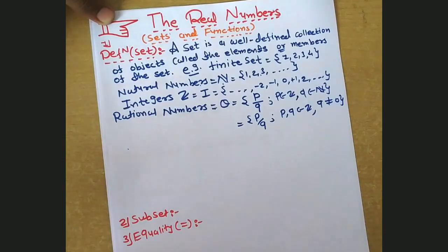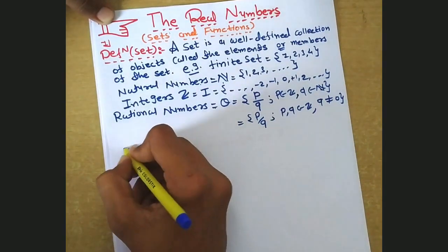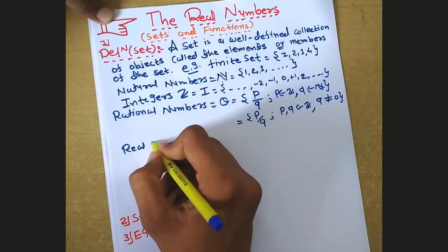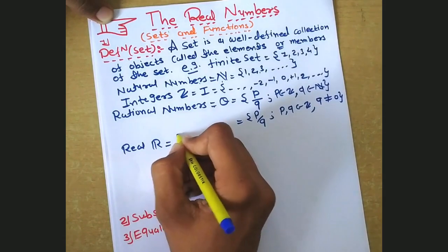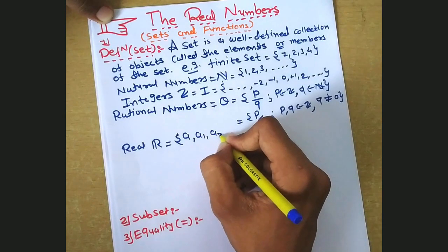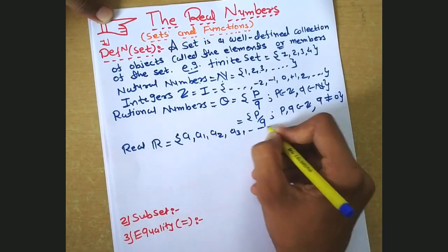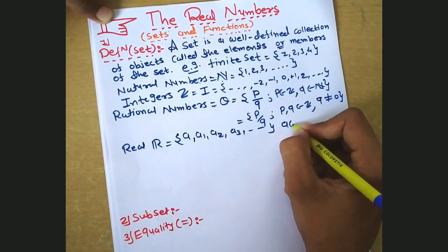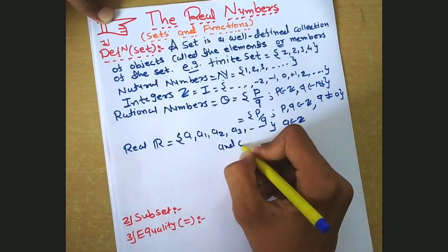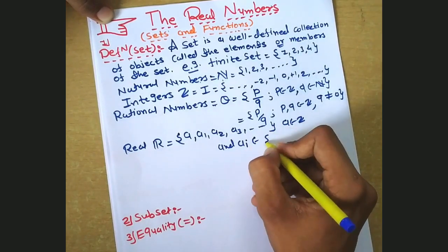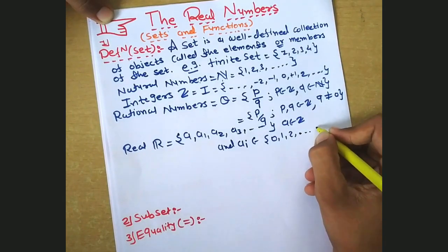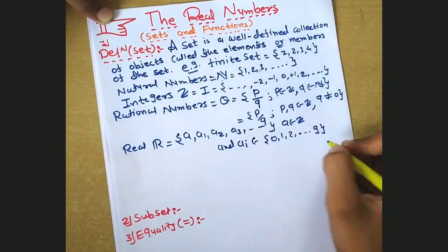Next, the set of real numbers R. It can be represented as a decimal expansion a1 a2 a3 and so on, where a belongs to Z and a_i belongs to {0, 1, 2, ..., 9} for every i.